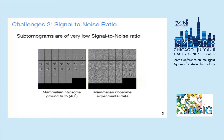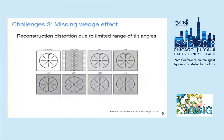Subtomograms are of very low signal-to-noise ratio. For example, on the right are slices of mammalian ribosome experimental data, and on the left is the ground truth. As you can see, the noise level of the experimental data is so high that you can barely see the ribosome, especially its fine details.